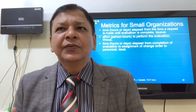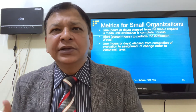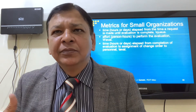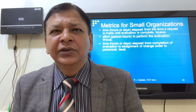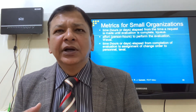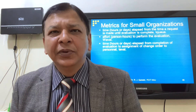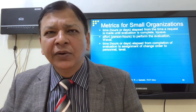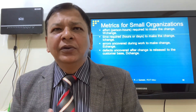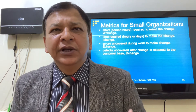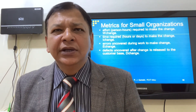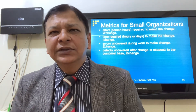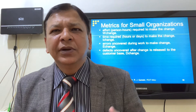Metrics for small organizations include: TQ — time passed from when a request is made until evaluation is complete; W evaluation — time in hours or days from completion of evaluation to assignment of change order to personnel; T evaluation — effort required to make a change; W change — time required to make a change; T change — as uncovered during work to make the change; E change — defects uncovered after the change is released to the customer base (D change).